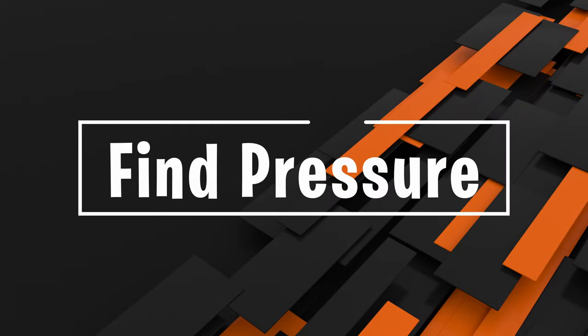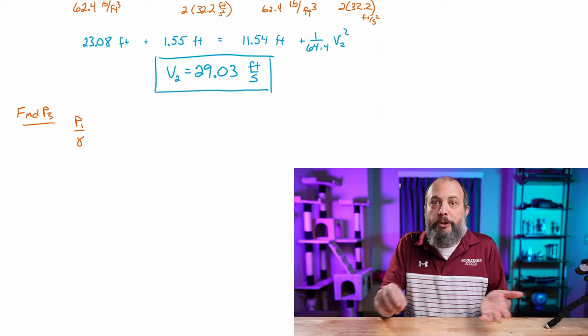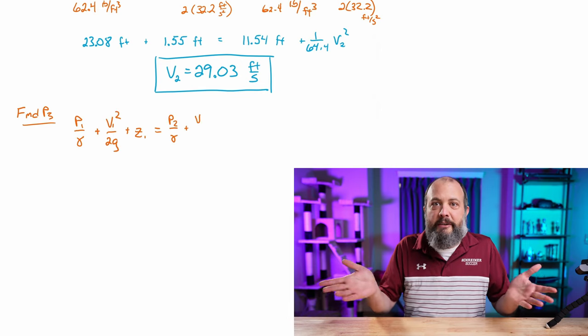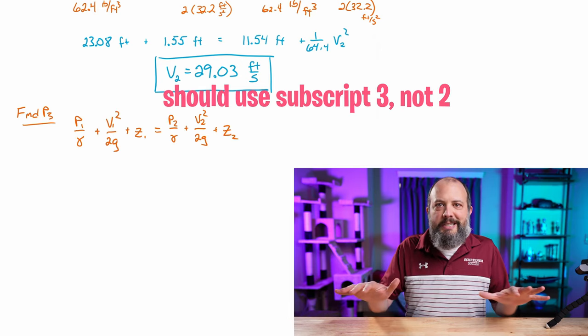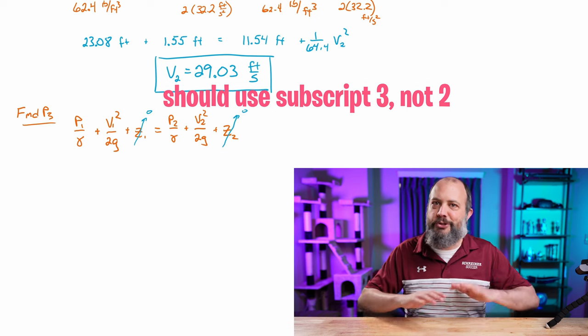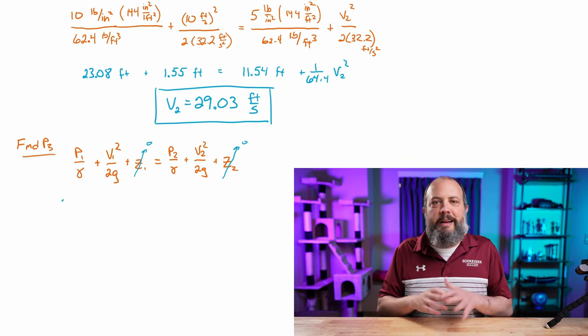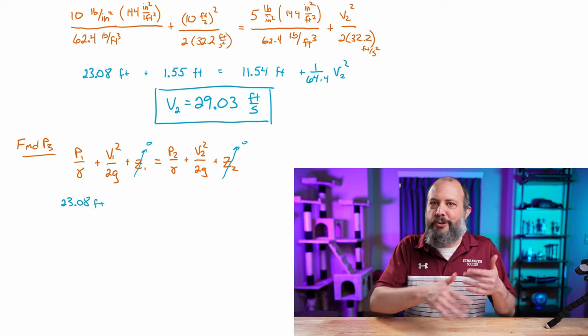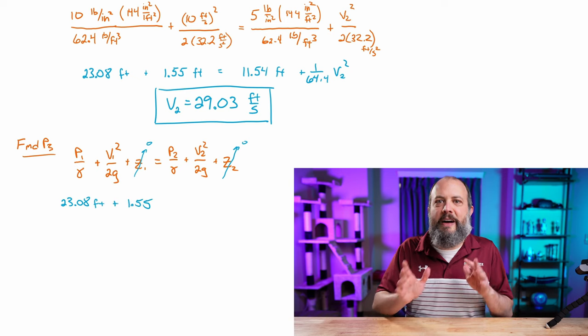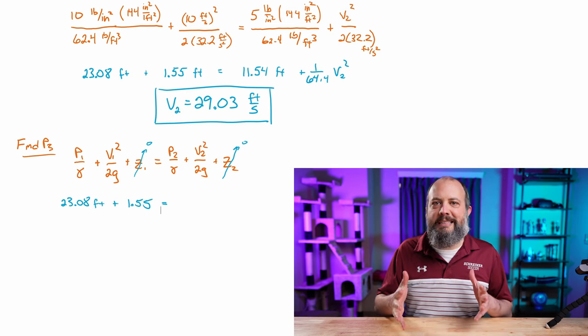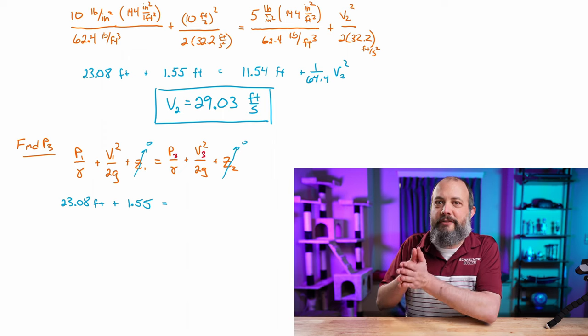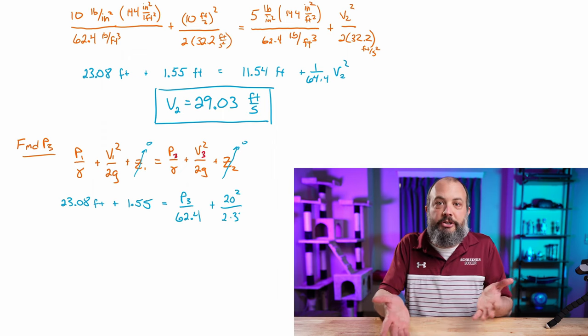Next part, find pressure point 3. Start out by writing Bernoulli's equation again. I'm going to go ahead and stick with the head form. Still keeping the same assumption that elevations are the same. So I'll cross off all the Z terms and I don't have to redo all the calculator work. 23.08 and 1.55 on the left-hand side. Over on the right-hand side, we were given velocity of 20 feet per second and we need to find pressure.